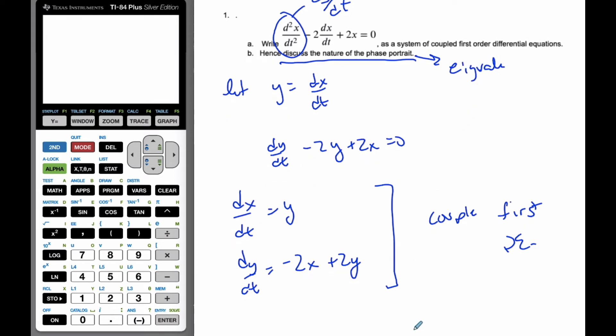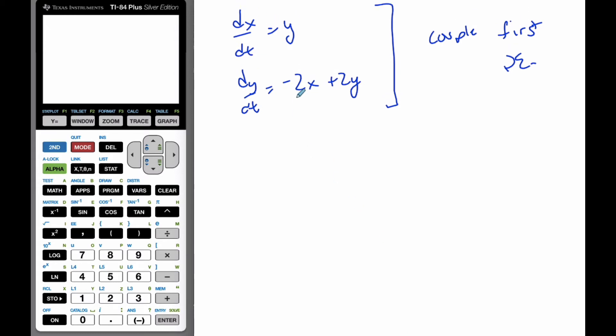Okay, so in order to find the eigenvalues, we make our matrix. 0 is our x value minus lambda, of course, 1. And then minus 2 and 2 minus lambda is equal to 0. So our determinant, adding our lambda in, is such.